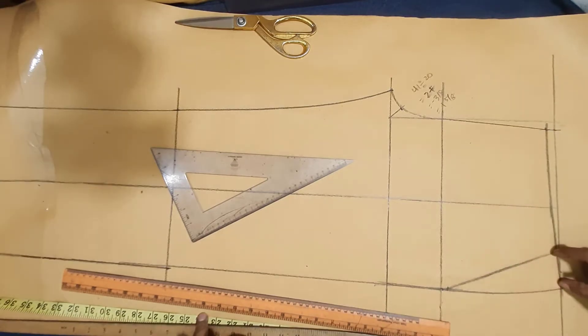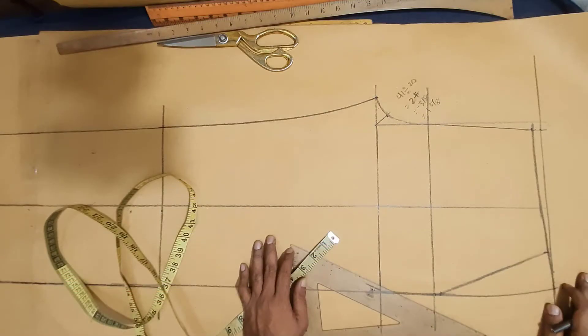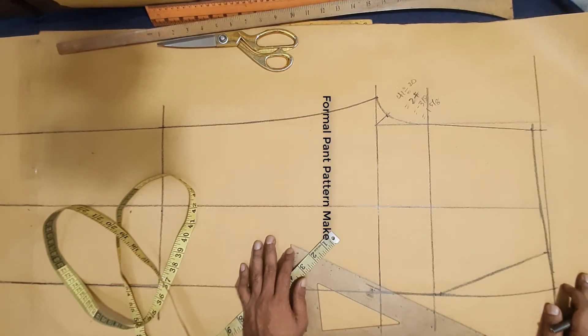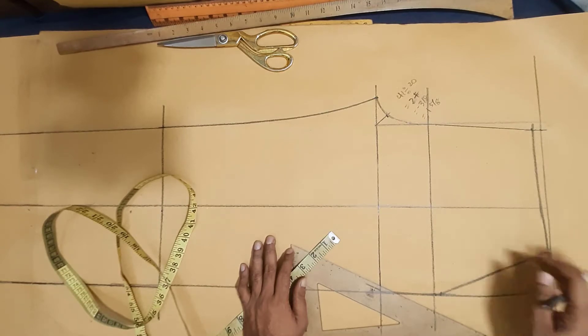Pocket triangle line, pocket opening at waist seam, formal pen, pattern making process, custom made pen, Bengali method, Bengali skill, pattern making hack that no one is talking about.